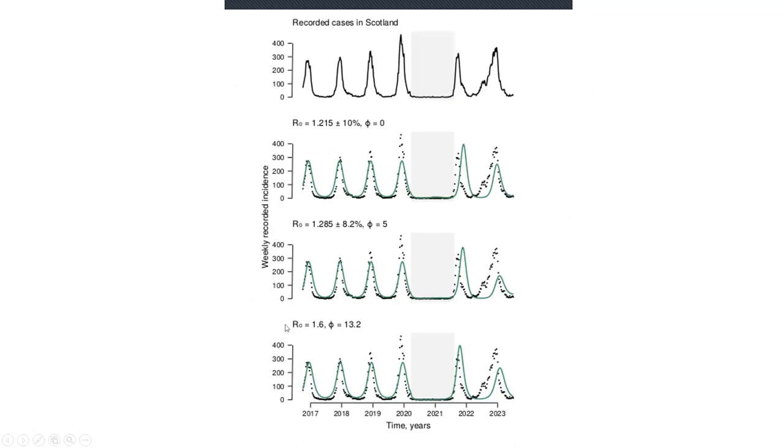You can replicate this either by having a really big seasonal effect on transmission—so this is a 20% change over the course of the year in how infectious RSV is—or by having absolutely no seasonal effect but a really big amount of immune boosting, and also by something in between.